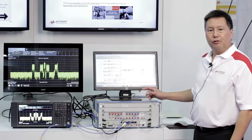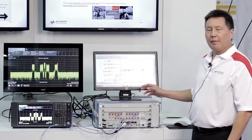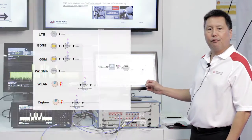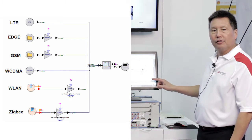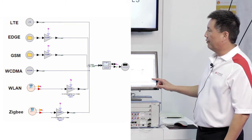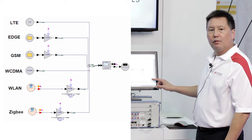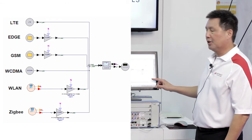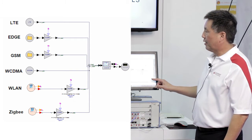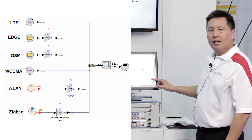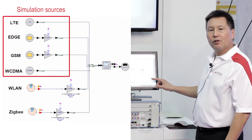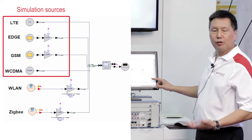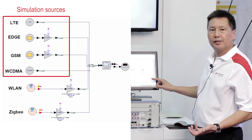For channel 2 we have a different schematic containing our 3G, 4G, and PAN waveforms. In this schematic we have an LTE source, an EDGE source, a GSM and WCDMA source, and also wireless LAN and ZigBee. A key thing to note is that LTE, EDGE, GSM, and WCDMA are all simulation sources — they are created within SystemVue.